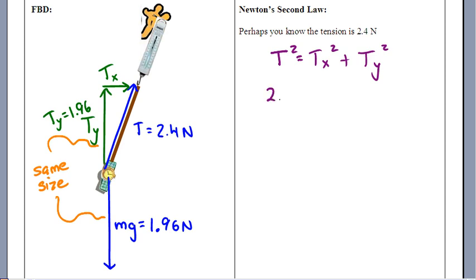So maybe we can get at this Tx through Pythagoras. So 2.4 squared is equal to Tx squared plus 1.96 squared. It doesn't take too long to solve this.